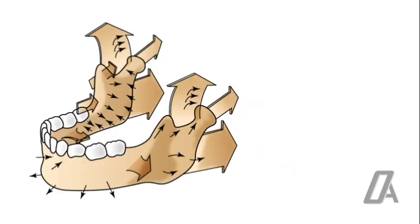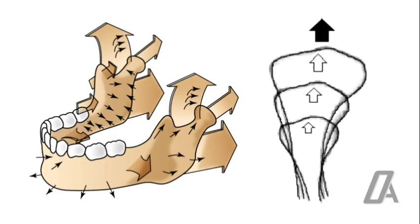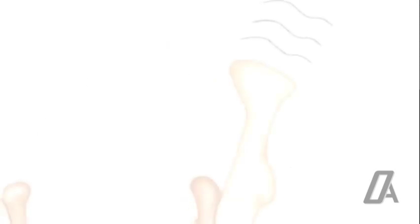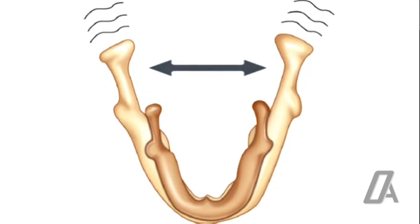The condyle undergoes reduction of bone on the lateral aspect of neck and deposition corresponding to the V principle, which makes the condyle longer at the neck. Thus, the intercanine distance is efficiently increased by the growth of mandible following the V principle.